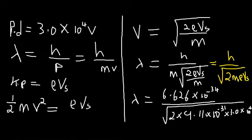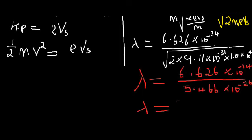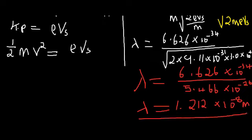Doing our numerical calculation, we get our lambda to be 1.212 times 10 to the power negative 8 meters. That's the de Broglie wavelength.